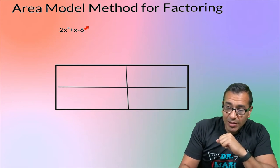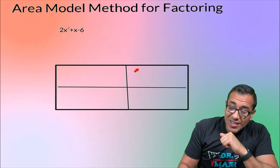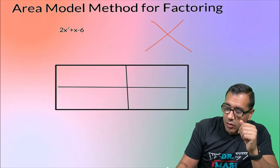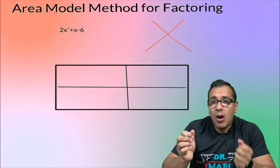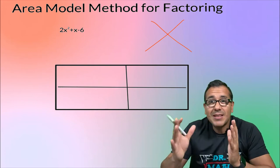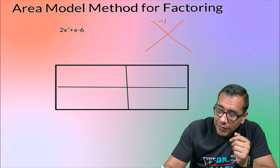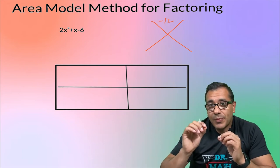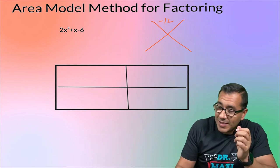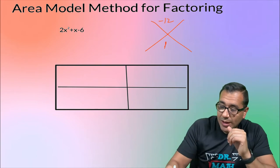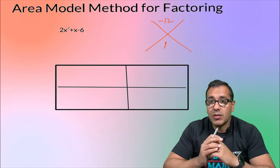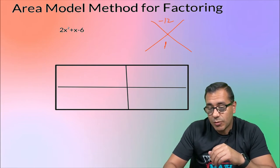We're asked to factor this quadratic, and we're going to use this area model to factor. Here's what the process looks like: first, we're going to multiply the first and last terms together — we just need their coefficients. So we're going to multiply two times negative six. Remember, first and last terms, make sure everything's in descending order. We get negative 12. Now that middle coefficient — the middle term is one X — so we grab that one. This comes from the coefficient of the middle term, and this comes from multiplying your first and last coefficients: two times negative six equals negative 12.